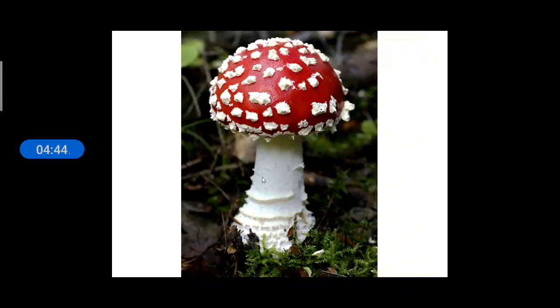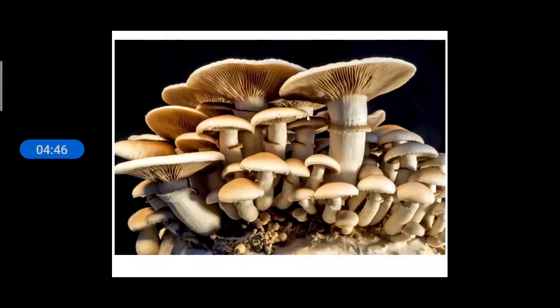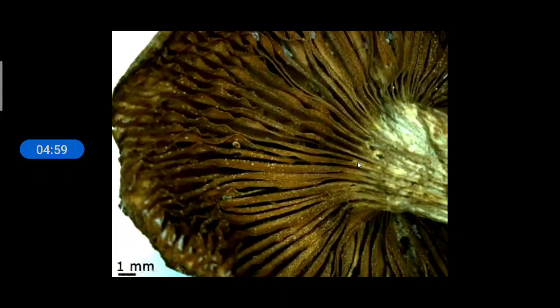And this is the structure of a mushroom. You can see an umbrella-like structure called Pileus. And below it there are gills. And a collar-like structure called Annulus. And a stalk called Stipe. And these are the gills.